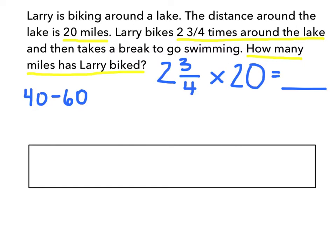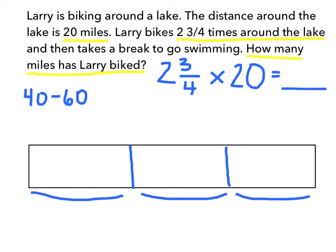Let's get started solving using the fraction bar. I am going to use this fraction bar and think of it as 3 connected fraction bars, and I am going to try to make them equal in size. So I have 3 fraction bars that are connected, and each of them represents 1 way around the lake, which is 20 miles.